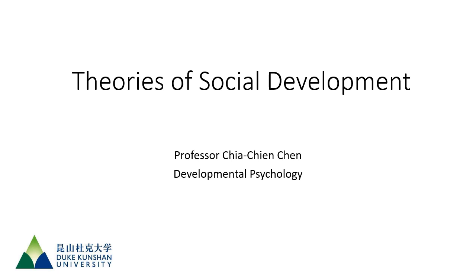In this lecture, we're going to review some of the theories of social development. These are the theories that attempt to account for how children's development is affected by the people and social institutions around them. These theories try to account for many important aspects of development, including emotion, personality, attachment, self, peer relationship, morality, and gender.